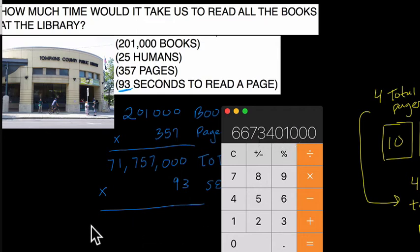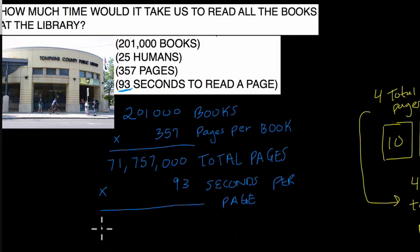So I'll write this down. Six billion, 673,401,000 seconds for one person to read 201,000 books, right? So that's our total for one person.